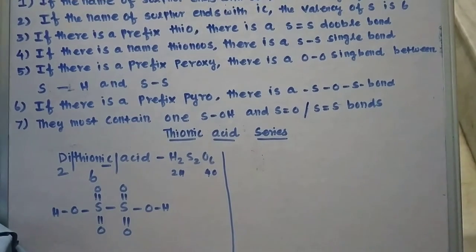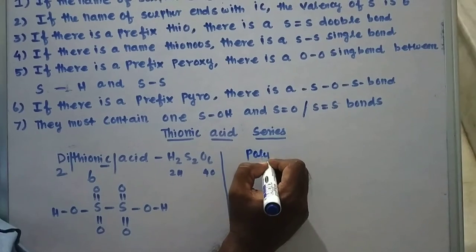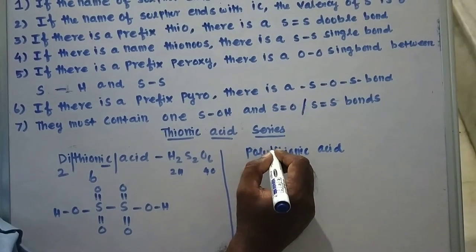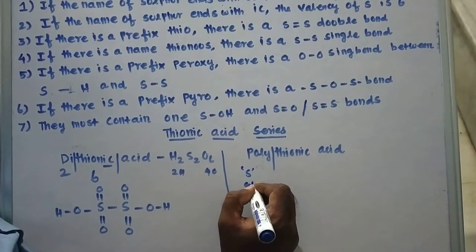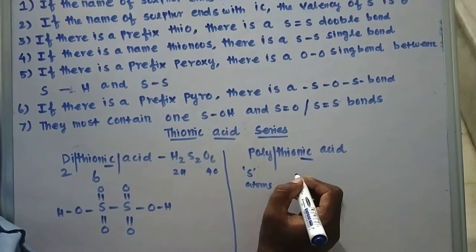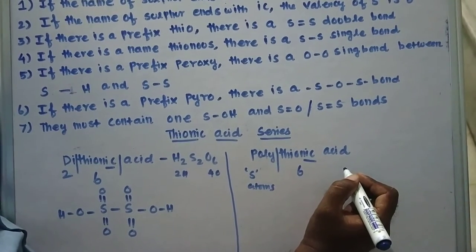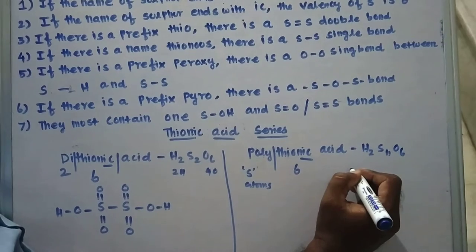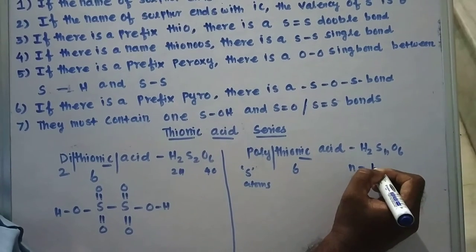Next we are going to discuss polythionic acids. Poly means more numbers of sulfur atoms. Thionic means valency ends with -IC, so valency of sulfur is 6. The formula of polythionic acids is H₂SₙO₆, where N indicates the number of sulfur atoms and may vary from 1 to 6.